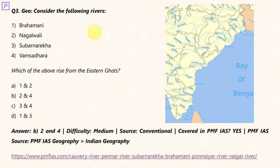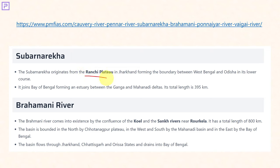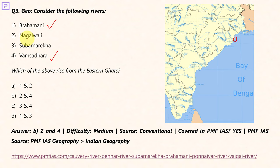Consider the following rivers: Brahmani, Nagalwani, Subarnareka, and Vamsadara. Vamsadara is the river whose waters are disputed between Orissa and Andhra Pradesh. The easiest option is Brahmani, because Brahmani and Baitrani are the rivers that combine and flow through the region where Bhitarkanika Mangroves and Wildlife Sanctuary is located. In PMFIS notes, we mention that Subarnareka rises in the Ranchi Plateau and Brahmani river rises near Raurkela in Orissa. Eliminating Brahmani and Subarnareka (1 and 3), the answer would be 2 and 4. Using the smart elimination method, you can easily find the answer.